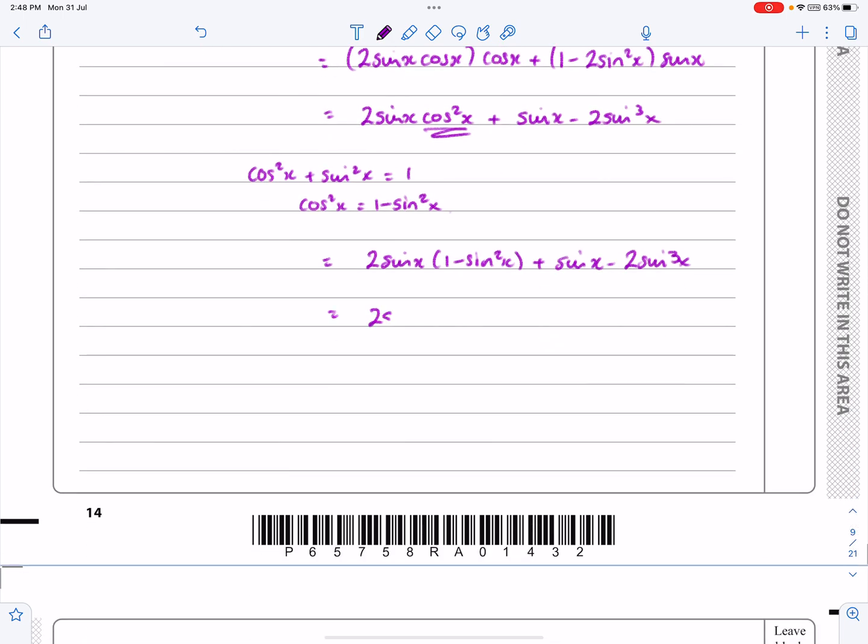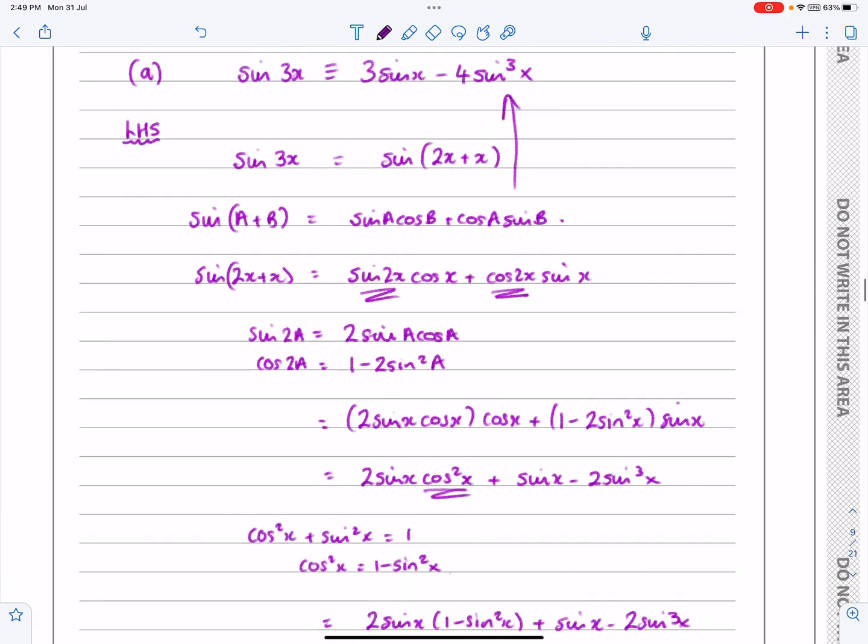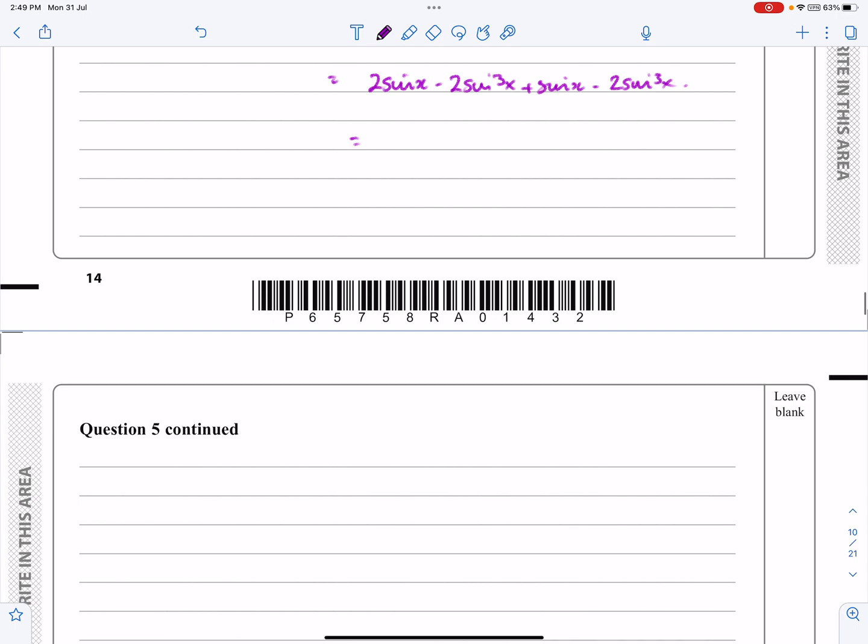Multiplying that out gives me 2 sine x minus 2 sine cubed x plus sine x minus 2 sine cubed x, which then works out to be what we were hoping to get right at the start, which was 3 sine x minus 4 sine cubed x. So 3 sine x minus 4 sine cubed x equals the right-hand side. For part A, I'm quite happy that we've got the answer.